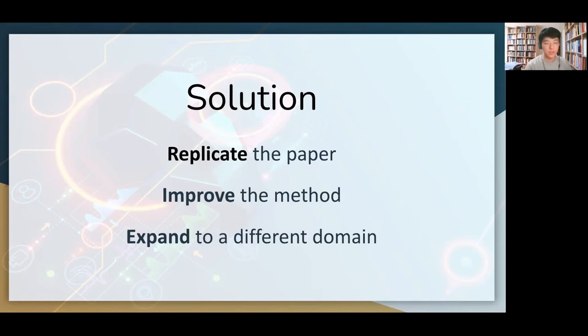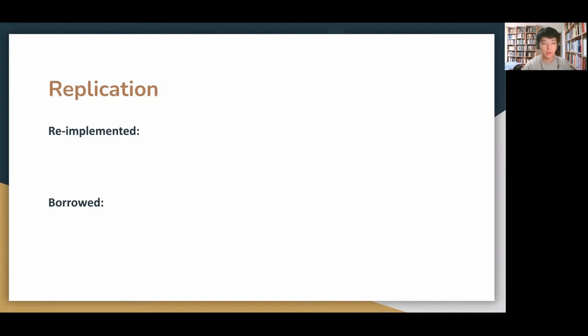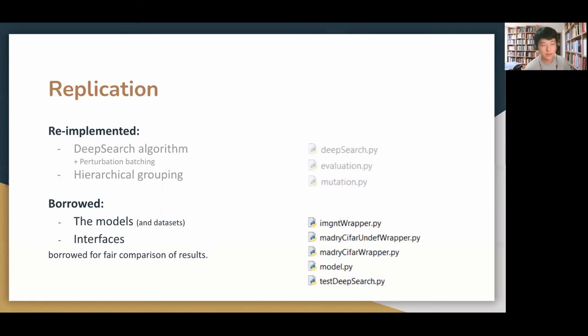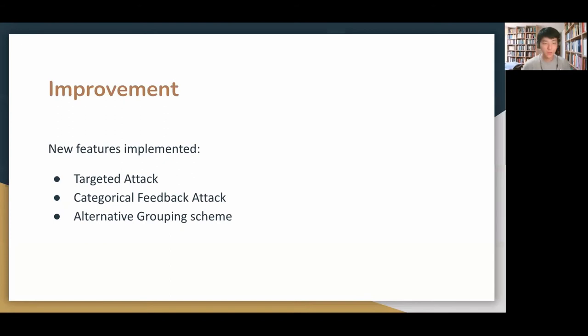We re-implemented most of the parts but we also disclosed that we borrowed a few codes from the original work for a good reason. Of course we implemented the core of the algorithm building up from mutation with grouping, image evaluation with the black box model, and the actual DeepSearch algorithm which is basically hill climbing. For fair result comparison we used the same models and data as the original research and we improved the interface to accommodate our new features.